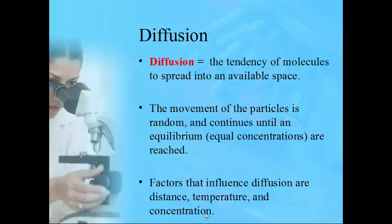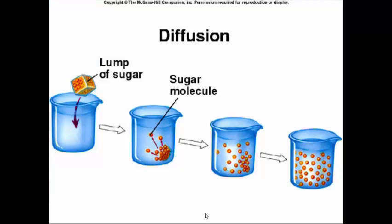A good example: if you sprayed something in a classroom, the people in the front row would smell it first and those in the back last, because it takes time for particles to diffuse evenly throughout the room. Similarly, if you add a lump of sugar to a drink and let it sit, it will eventually disperse equally throughout the container. The movement is totally random until equilibrium is reached — that's the key for diffusion.